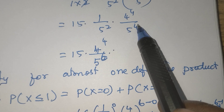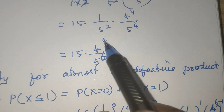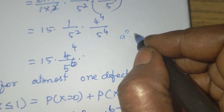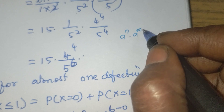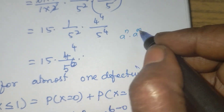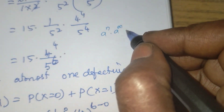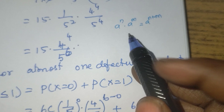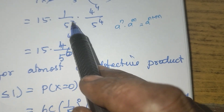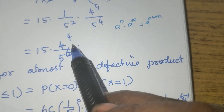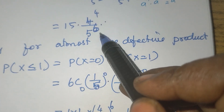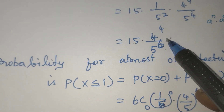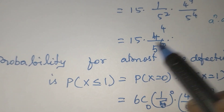Combining the powers of 5: (1/5)^2 times (1/5)^4 gives 5^6 in the denominator. So P(X = 2) equals 15 times 4^4 by 5^6. This is the answer for the first subdivision.